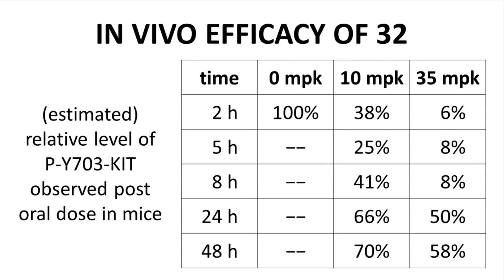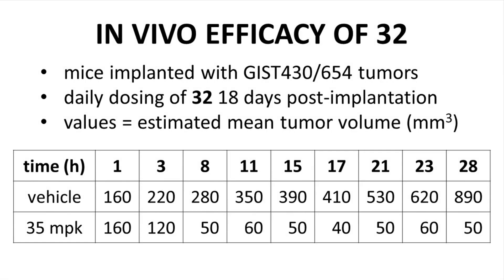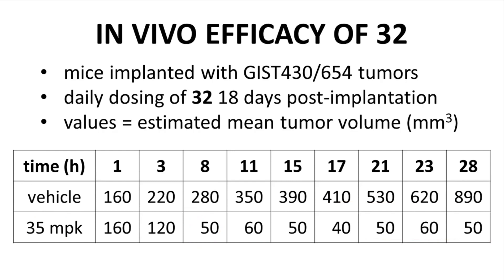Can compound 32 affect tumor growth? In another study, tumors were implanted in mice. The tumors were GIST 430-654, a cell line with mutations for both increased constitutive activity and imatinib resistance. 18 days after implantation, the mice were treated and tumor volumes in cubic millimeters were monitored for 28 days. In the vehicle group, tumors steadily grew in volume as expected. In mice dosed once daily with 35 mg/kg of compound 32, the tumor shrank within a week and maintained a small volume for the remainder of the study. With these in vivo studies, the discovery team had evidence of on-target activity and reduction of tumor volume.